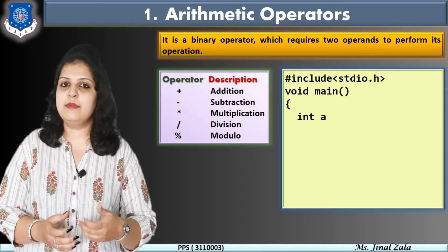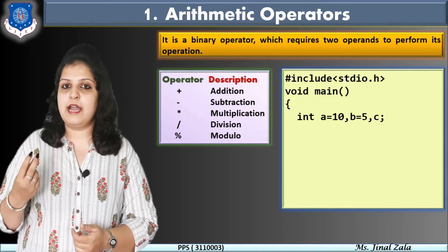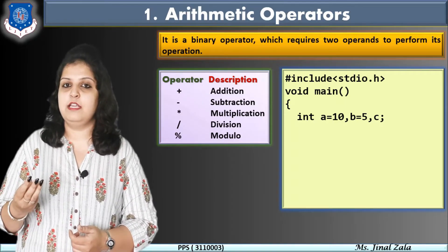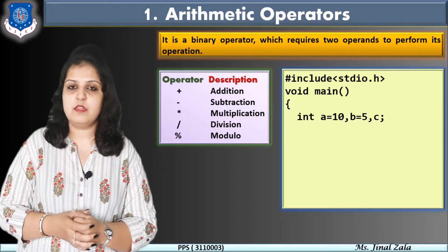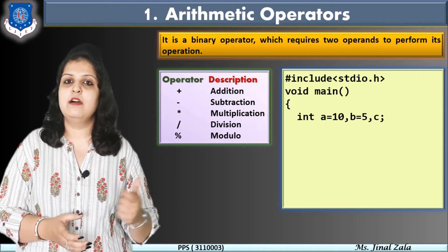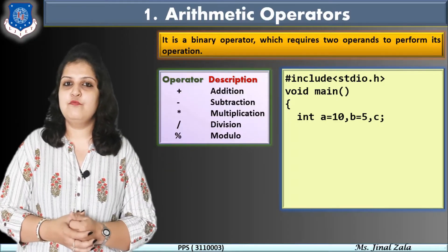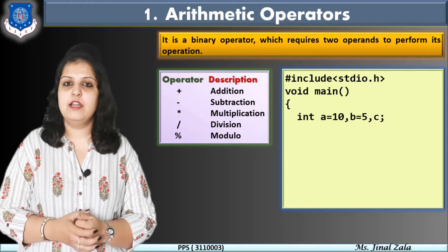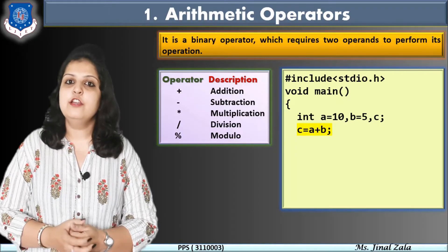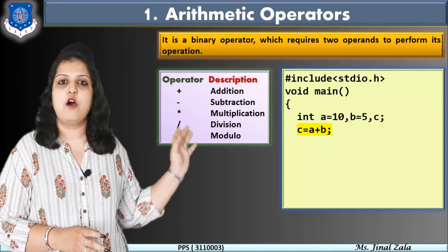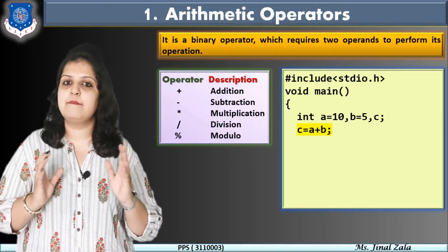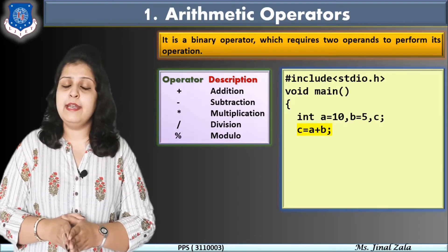How many variables are required for declaration? For addition of two numbers, two variables are required, and a third variable is used for storing the answer. So here, integer a is equal to 10 and b is equal to 5 — these two are our input variables. Third is c, which will be used for storing the answer of the addition. Next is c is equal to a plus b, where plus is our arithmetic operator. You can write any of the examples: a minus b, a into b, a divided by b, or a modulo b — these are all examples of arithmetic operators.